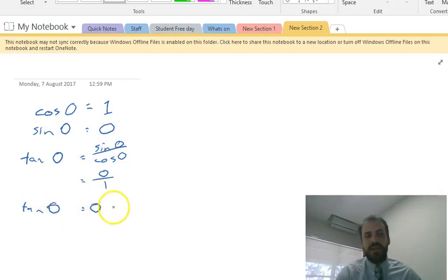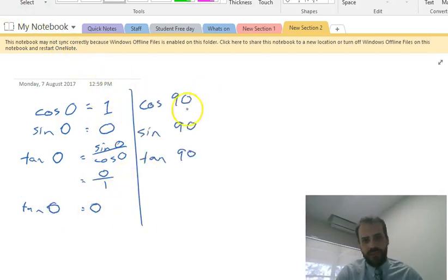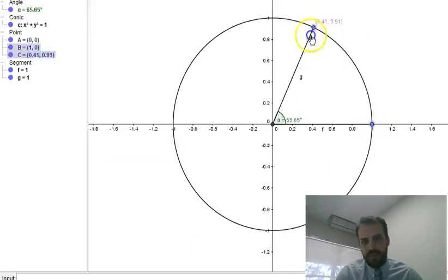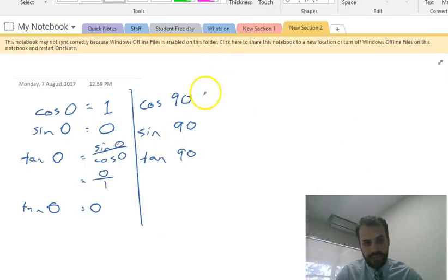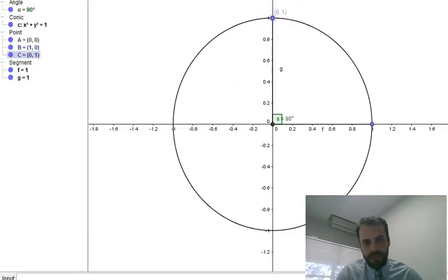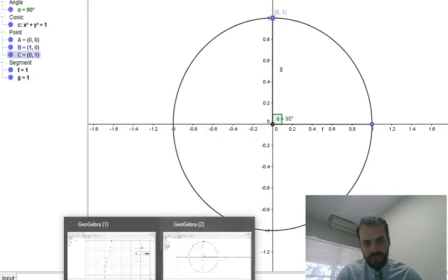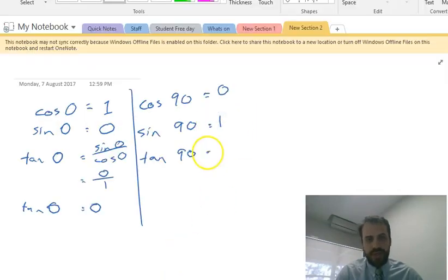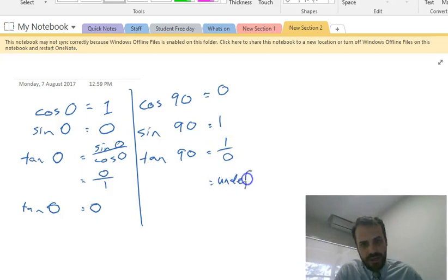Now for cosine 90, if I go back to our little thing here, if I move it up to 90 degrees, cosine is our x value, which is zero. Cosine 90 is zero. Sine 90 is one. And tan 90 equals one divided by zero. Sine 90 divided by cosine 90. And if you divide something by zero, the world explodes. And our answer is undefined.